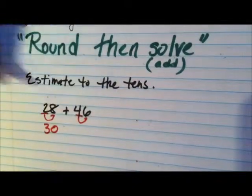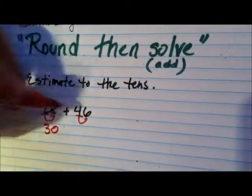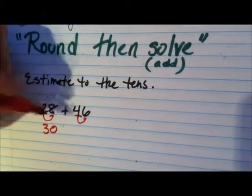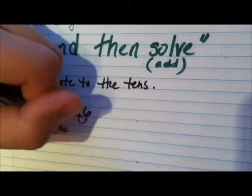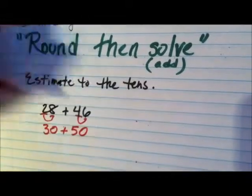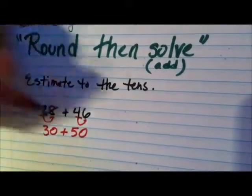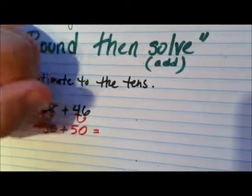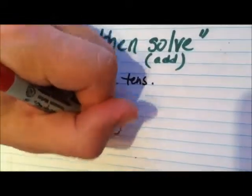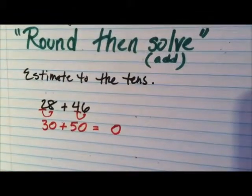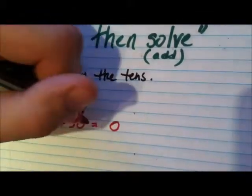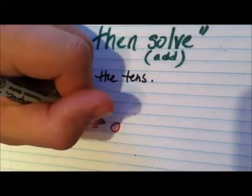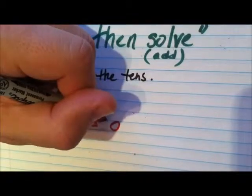Forty-six — the six is past five, so that's five to the sky, and it rounds up to fifty. Then we add them: the zeros are easy to add in the ones place, so that's zero. And the tens are easy to add — it's five and three, which gives us eighty.